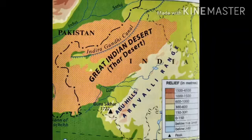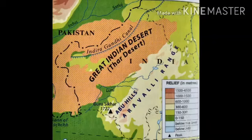The Thar Desert is located in the north-western part of India, in the state of Rajasthan. It is bordered by the Sutlej River on the north-east. It has a salt marsh known as the Rann of Kutch towards its south. To the south-east lies the range of Aravalli Hills, and the desert extends west into Pakistan till the Indus River Basin.